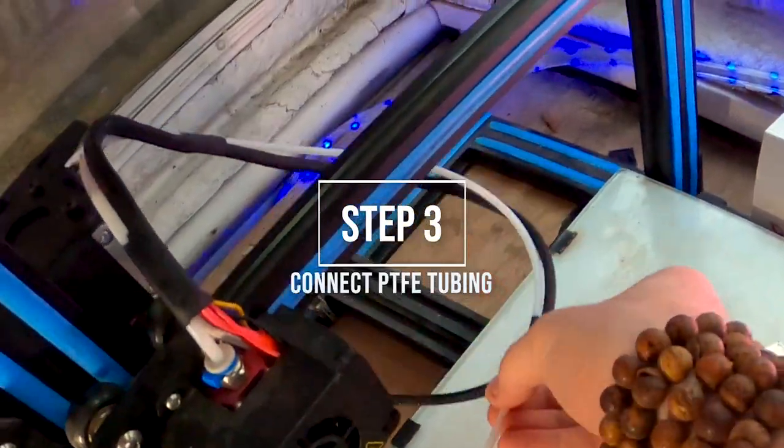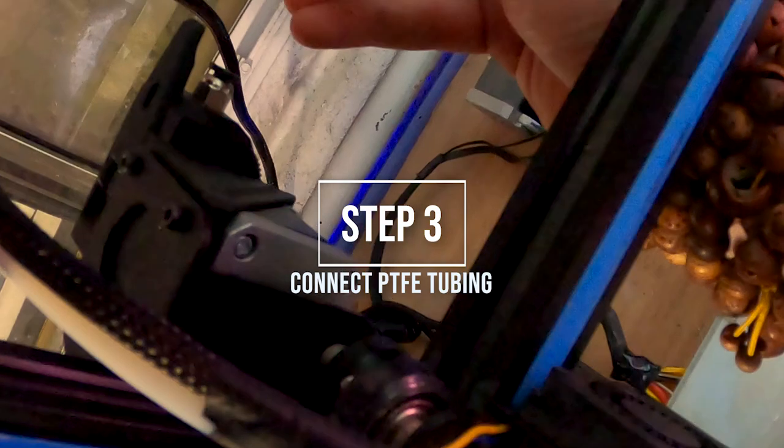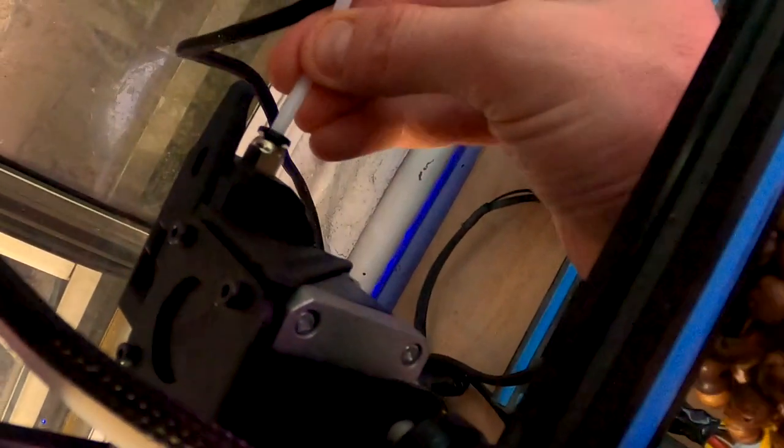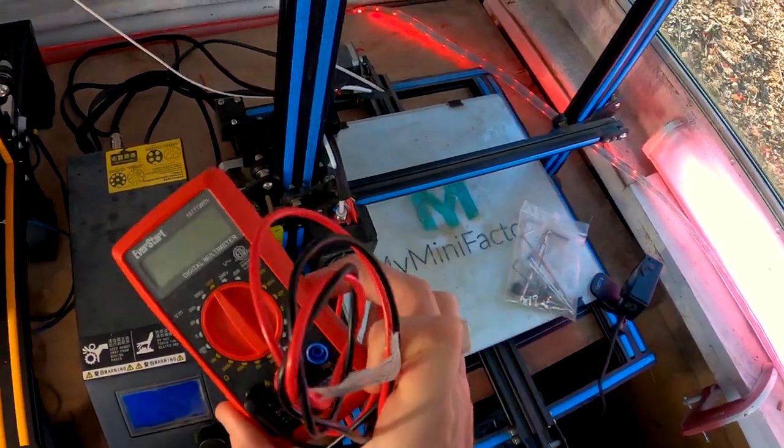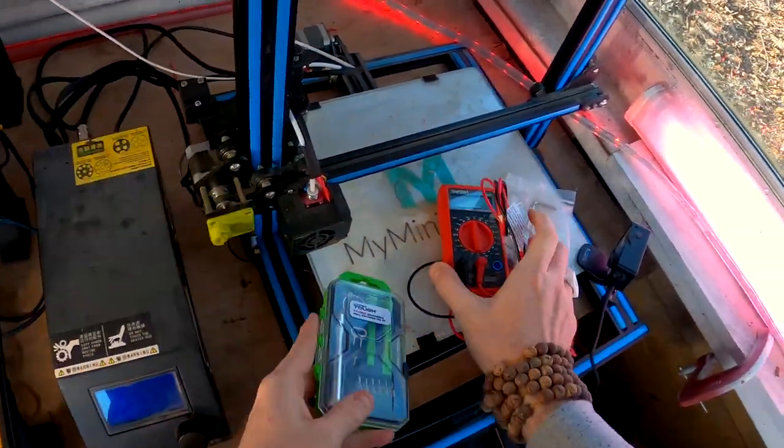And there you go. And now we'll connect the tubing into the brand new Bontech extruder. And for this part, you're going to need some Allen wrenches, a multimeter, and a tiny screwdriver.